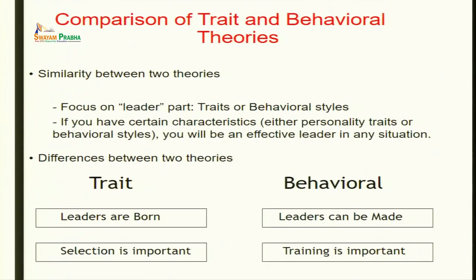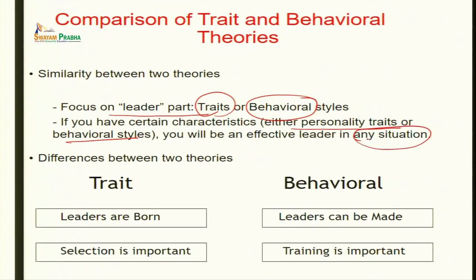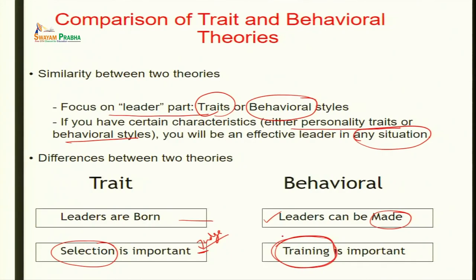Before moving to contingency theories, it is worth noting the similarities and differences between trait and behavioral theories. Both focus on the leader — either traits or behavior — as the driver of leadership effectiveness. The key difference is that trait theory says leaders are born, while behavioral theory says leaders can be made. Accordingly, selection is the priority for trait theory, while training is the priority for behavioral theory.